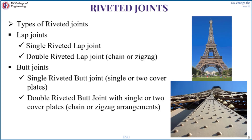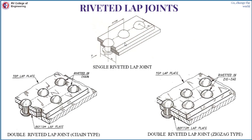The types of riveted joints: the first is the lap joint, and the second is the butt joint. A lap joint is made by placing two metallic plates one above the other, drilling a hole, and then riveting. If there is a single row of rivets it's called a single riveted lap joint; if there are two rows it's called a double riveted lap joint. The arrangement of rivets also matters — if the rows are aligned it's called chain type; if placed in a zigzag manner it's called zigzag type.